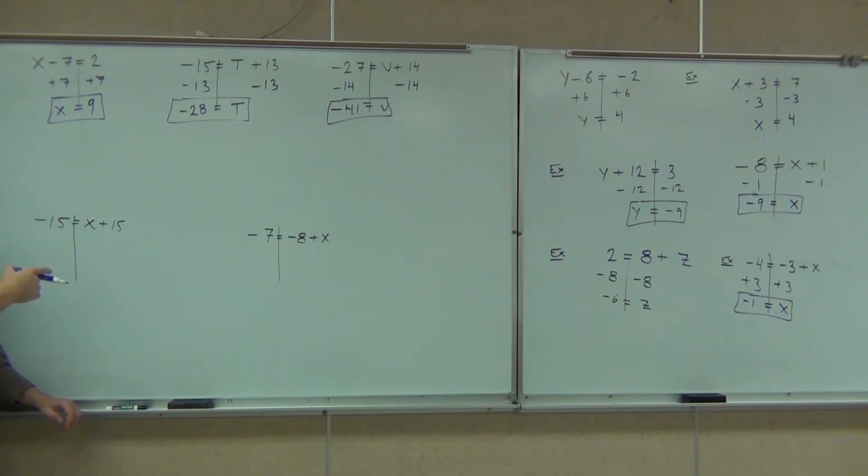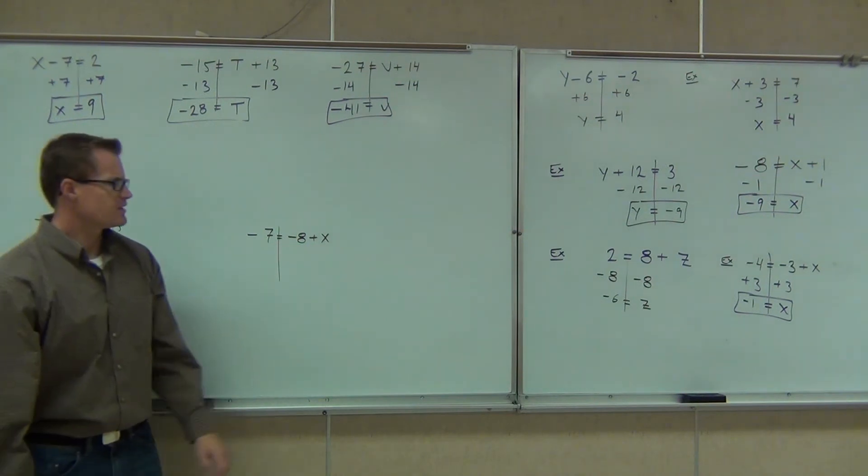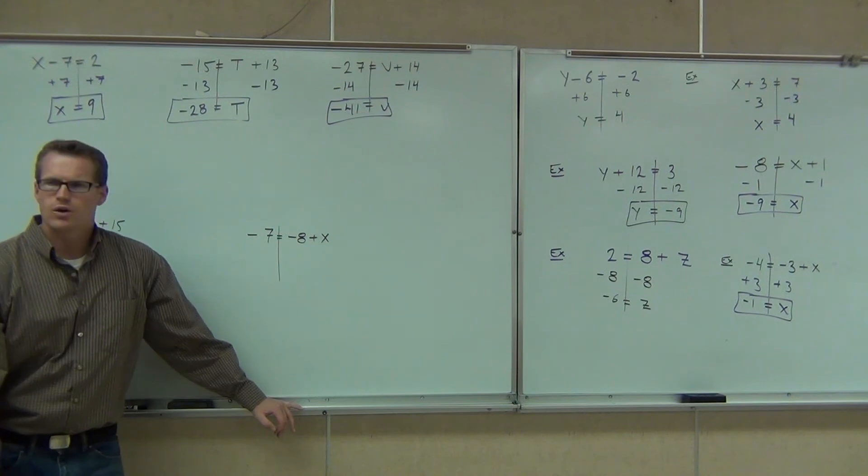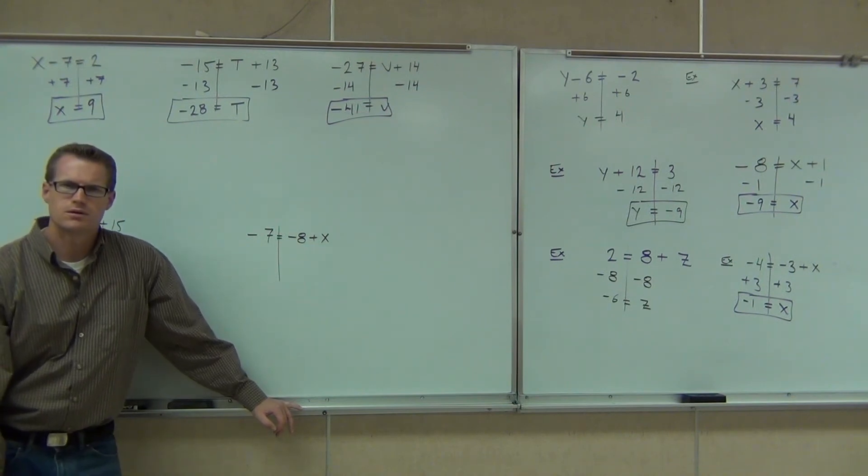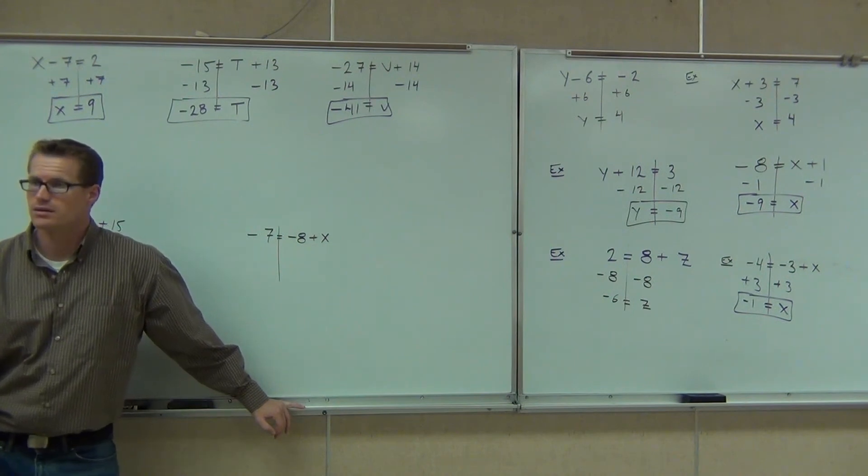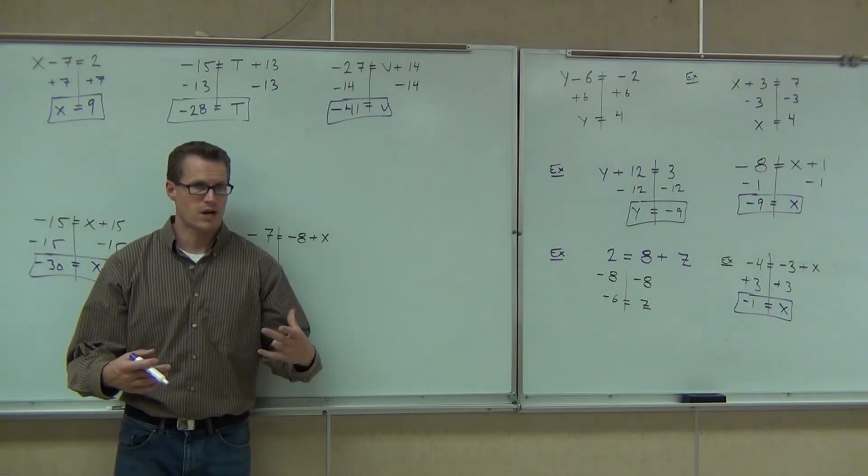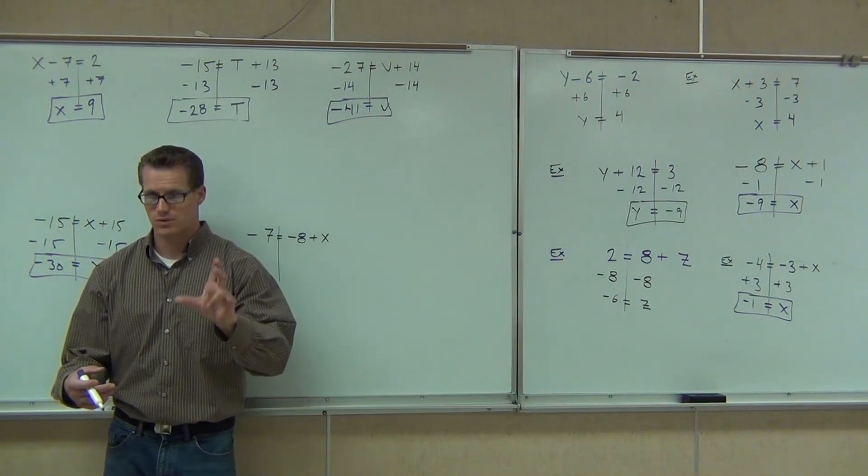Okay. Next up. What do we do here? Subtract 15. So we're going to subtract on both sides, of course. Am I going to get zero? Negative 30. Good. Yeah. Don't fall into that trap of just saying the same thing and giving zero. That really does need to be negative 30. And lastly, we have negative 7 equals negative 8 plus x. What do we need to get rid of? Negative 8. Good. How do we get rid of that negative 8? Positive 8. Perfect.